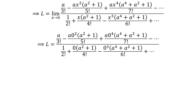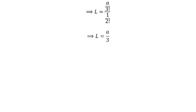Now the limit L is no more in any indeterminate form, so we can replace x by 0 to find the limit value. After simplifying the above expression, we are left with the limit L equal to a upon factorial of 3, divided by 1 upon factorial of 2. After further simplification, we get the value of limit L equal to a upon 3.